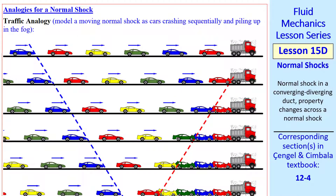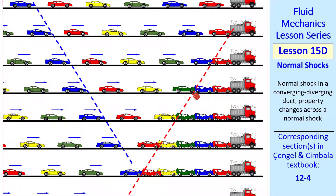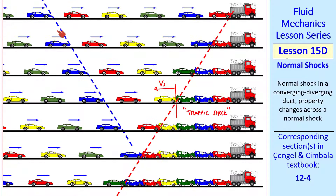I want to give a couple analogies for a normal shock. The first is a traffic analogy. Suppose it's a foggy day on the interstate, and a salt truck suddenly stops. These cars are all moving at a constant speed. The first car hits the truck, smashes its hood, then the second car hits the first car, and this keeps happening. I drew a dashed red line where each car hits and gets smashed — we can call this a traffic shock, moving to the left at some speed Vs. The density of cars has gone up significantly, in analogy to a shock in air where there's a sudden increase in air density across the shock.